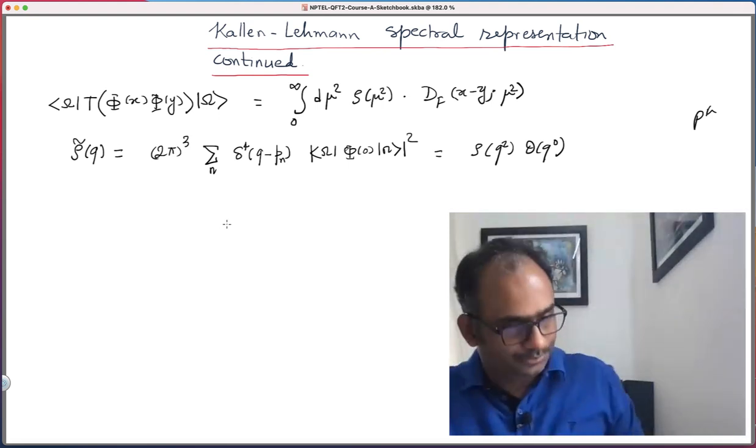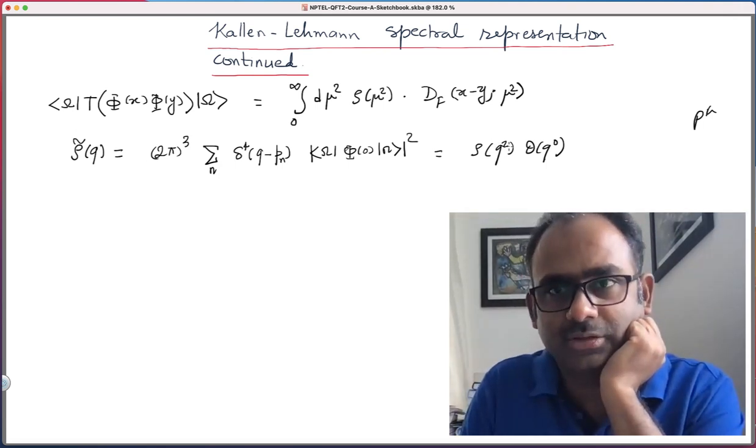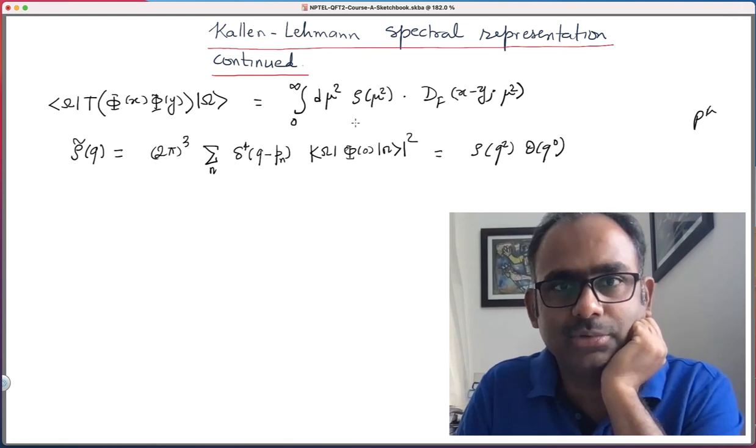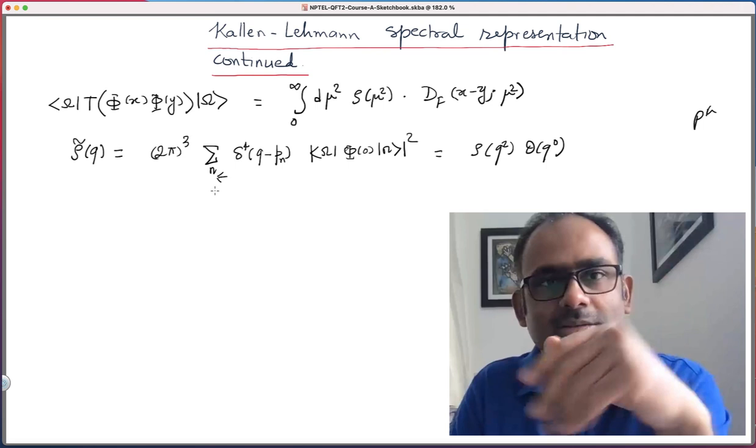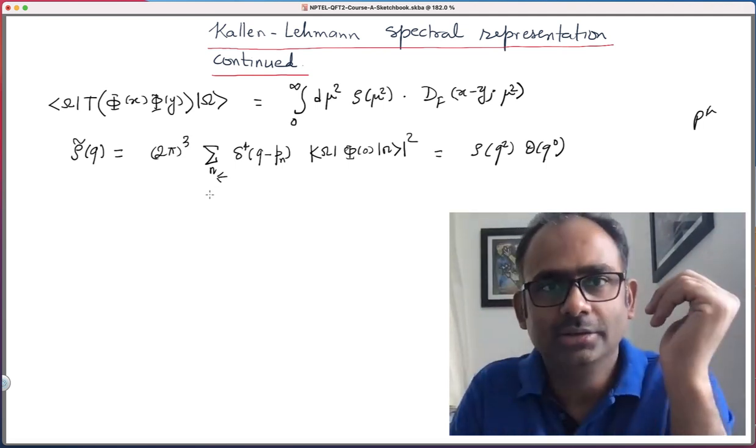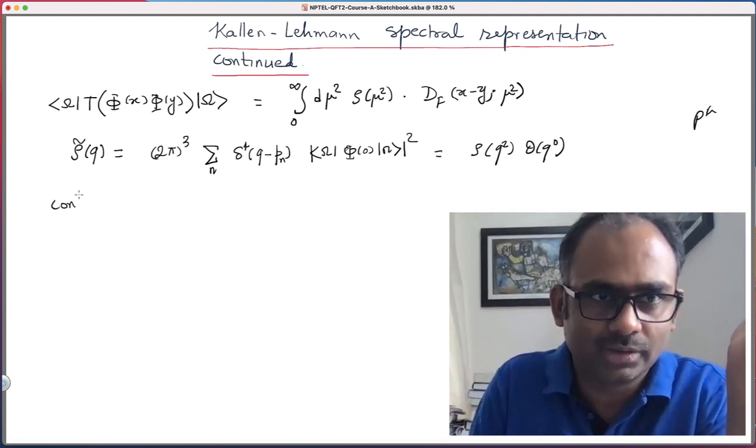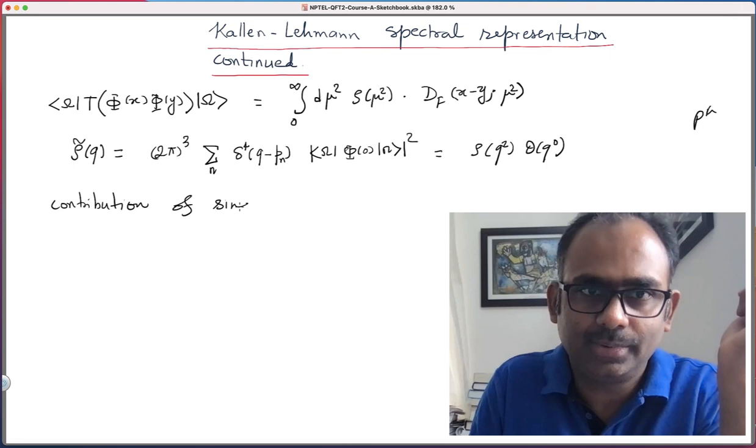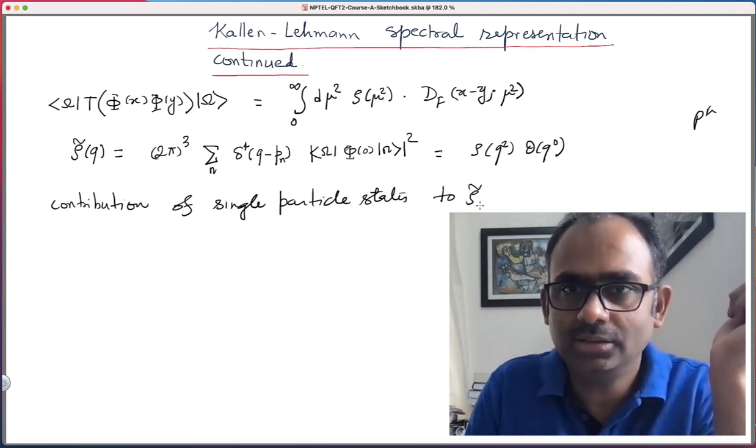Now we will continue from here. You see rho tilde of q or equivalently rho of q square gets contributions from all possible states n, all the states like single particle states, multi-particle states. So single particle state, two particle state, three particle state, in general everything will contribute. So what I want to do now is to filter out the contribution of single particle states.